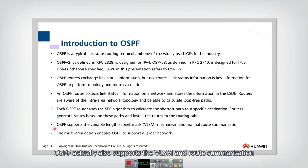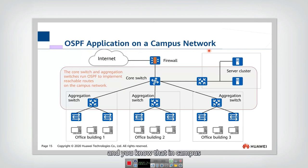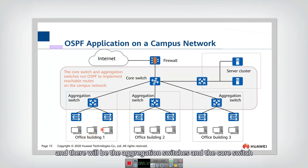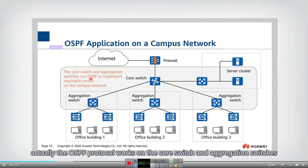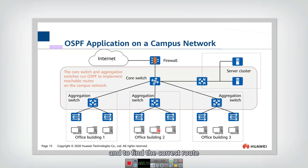OSPF also supports VLSM and route summarization. As an example of OSPF application, consider a campus network with different buildings. Each building may have local area networks, and there will be aggregation switches and core switches to connect all these LANs together. OSPF works on the core switches and aggregation switches — you can think of all these switches as routers — and they coordinate to find the correct route for every packet.